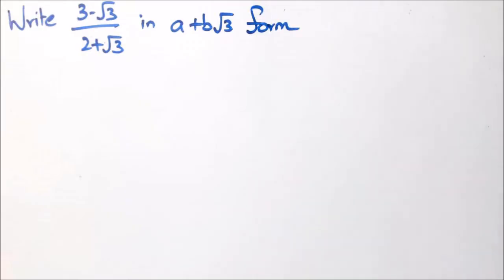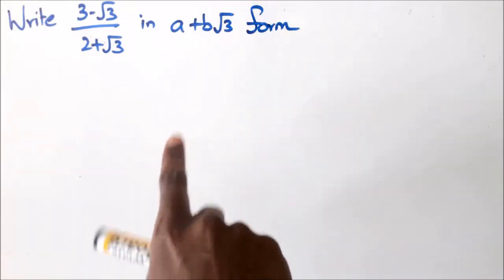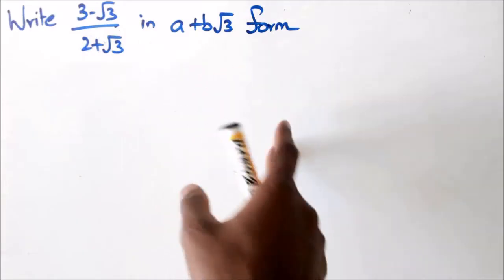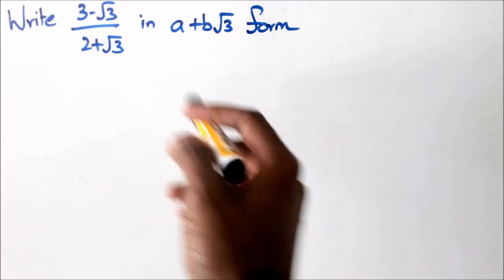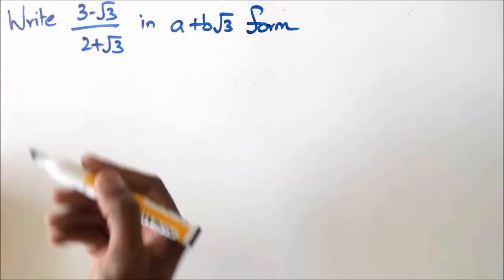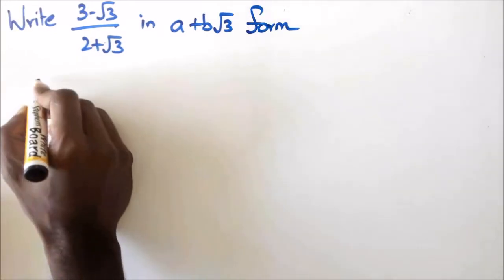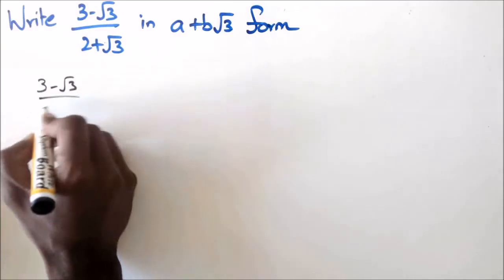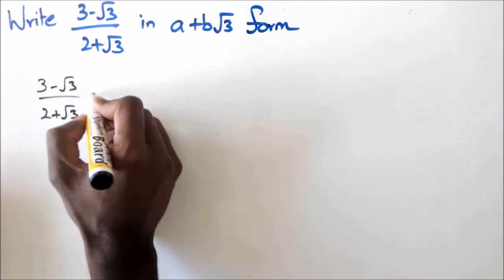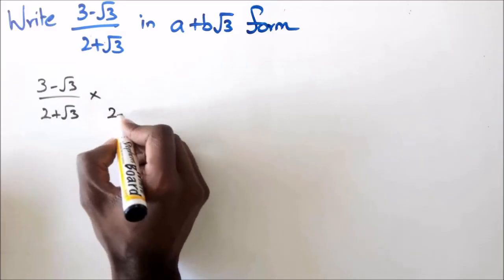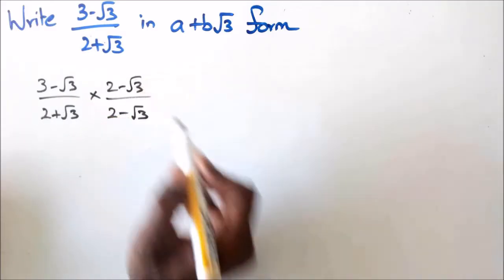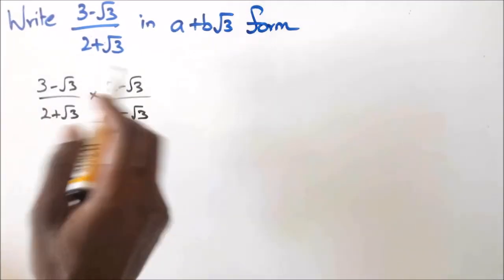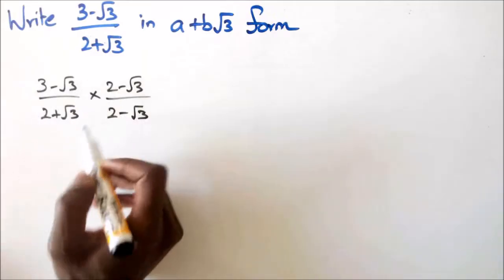For the third question, you're asked to write this equation in a plus b√3 format. You need to rationalize the denominator. We've got 3 minus √3 over 2 plus √3, and we're going to multiply by the conjugate opposite, which is 2 minus √3 over 2 minus √3.